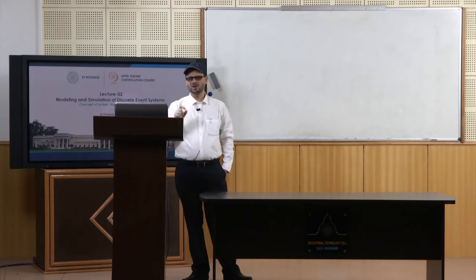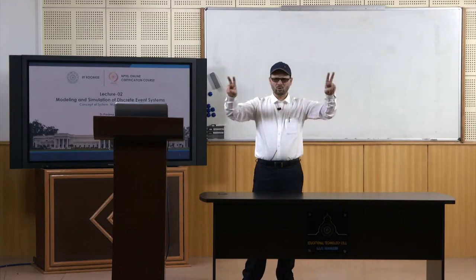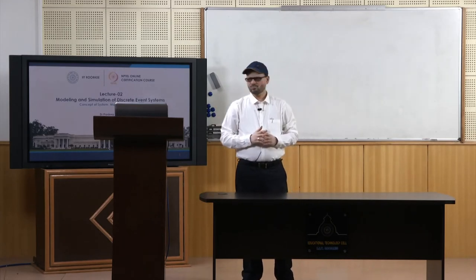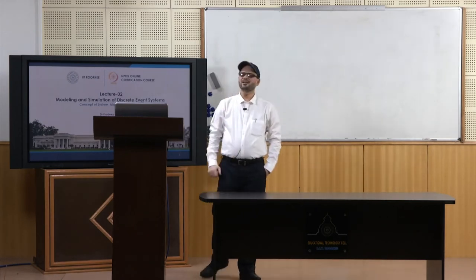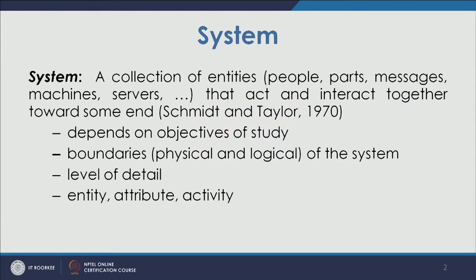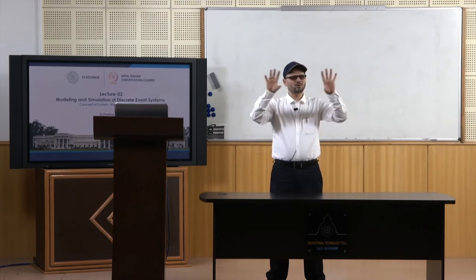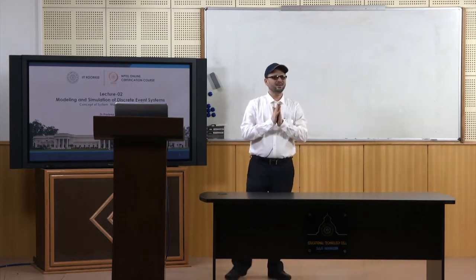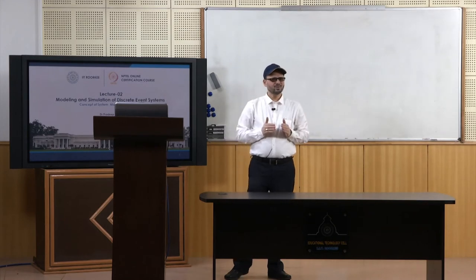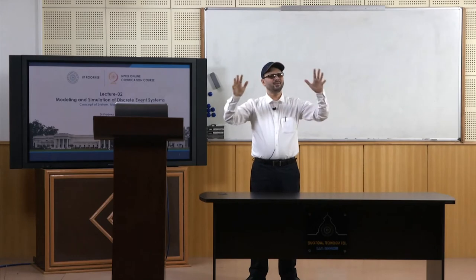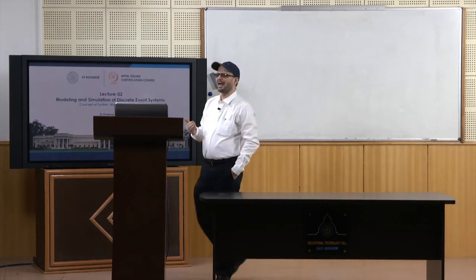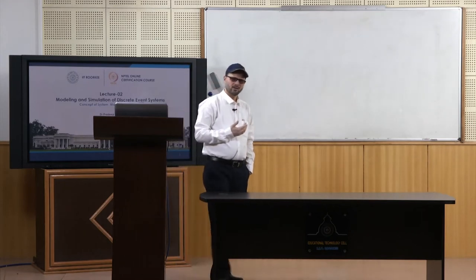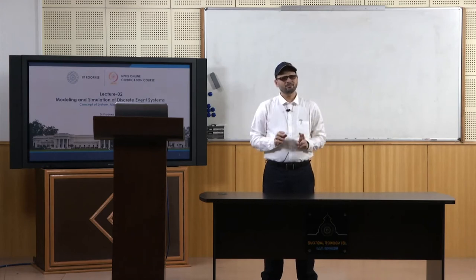These entities acting and interacting together towards some end constitute a system — this definition is given by Smith and Taylor in 1970. It depends on the objectives of study: what you want to achieve and study defines and sets the limit of that system. A system may be smaller or larger, and that determines its boundaries.